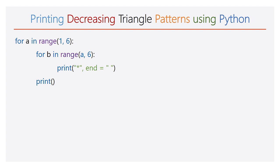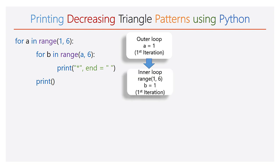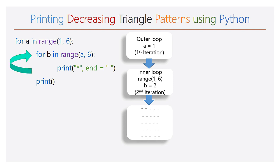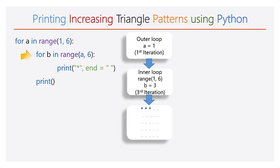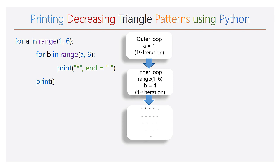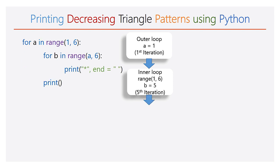Step by step we will look at how the execution will proceed. During the first iteration of the outer for loop, the value of a will be 1. Then the inner for loop will be executed and it will have the range 1 to 6, and this will iterate 5 times. During each iteration, 1 star will be printed in the output. Hence there are 5 stars in the first line. After completing all the inner for loop iterations, the print function will be executed.